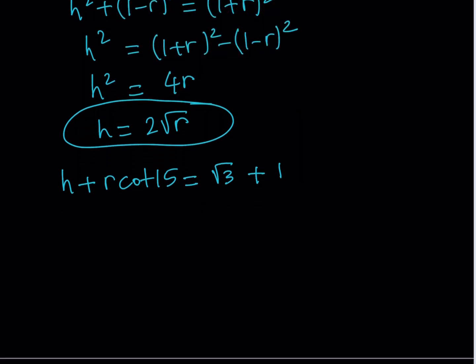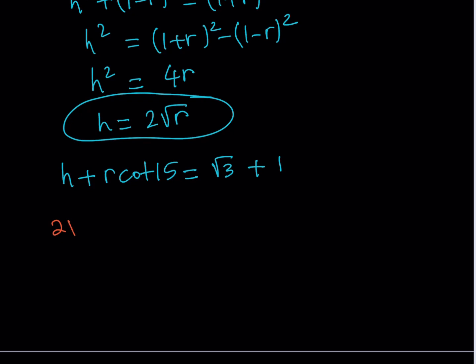But what's going to make it more awesome is that we know H in terms of R so that we can use substitution. So now I'm going to replace H with 2 root R. And then at this point, I'd like to substitute something for cotangent 15. Now, there's a couple of ways to find cotangent 15. You can use cotangent 45 minus 30, and then find maybe tangent 15, and then reverse it. Or there's a cooler way to do it, which I'm going to show you right now.